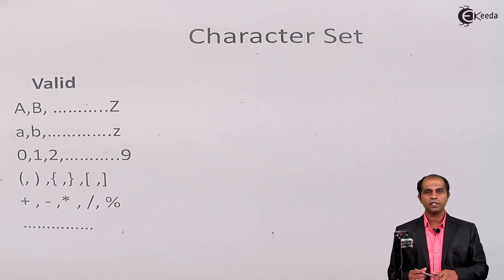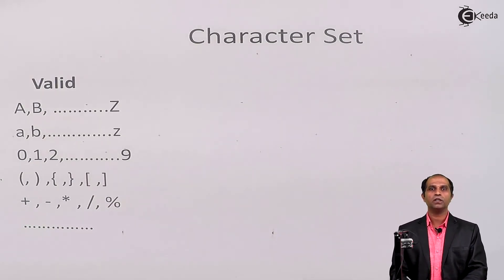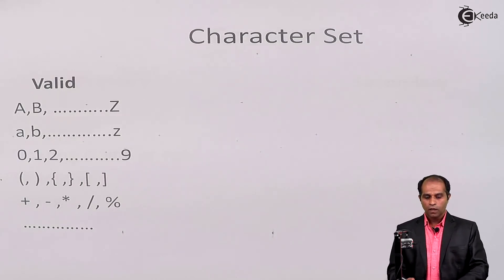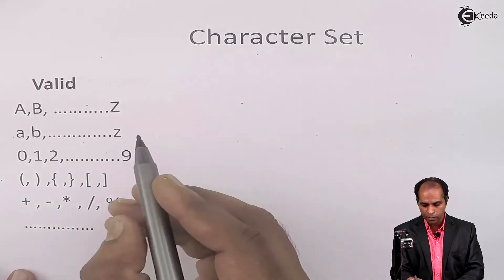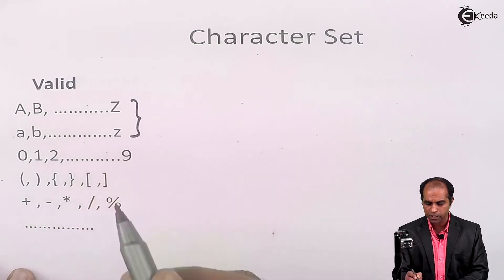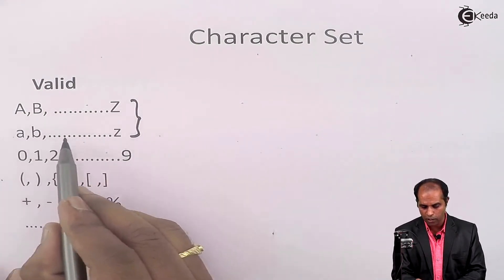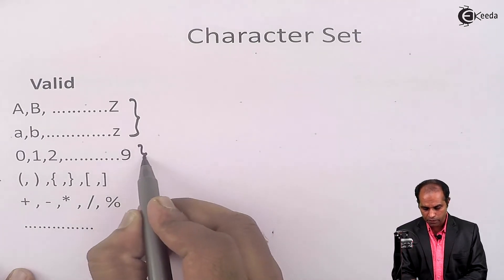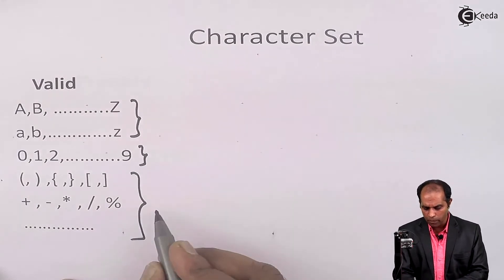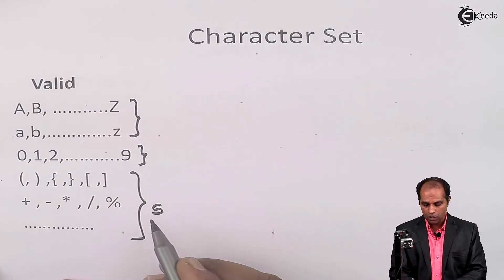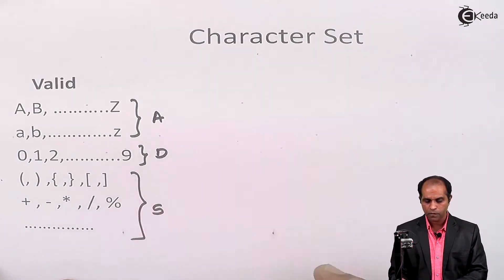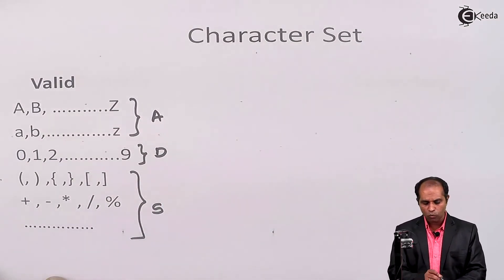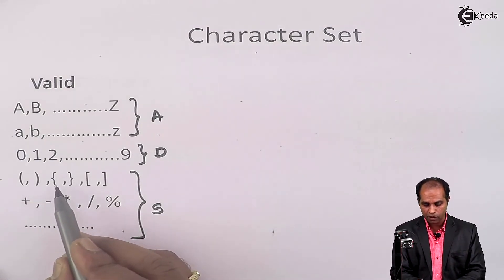Let's point out what are the various valid characters and invalid characters which should or should not be used in our program. As I've listed out, some characters are very much valid in C language. Basically, the character set of C language is a combination of alphabets — it can be uppercase or lowercase — digits, and special characters. A special character is a set of characters which are there on the keyboard but neither an alphabet nor a digit. You can use almost all the special characters on the keyboard, for example brackets: round brackets, curly brackets, square brackets.